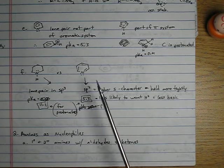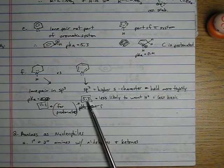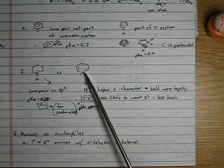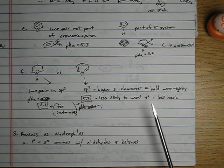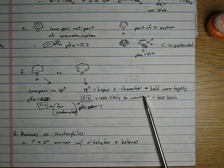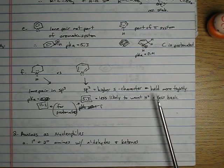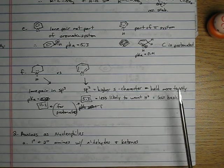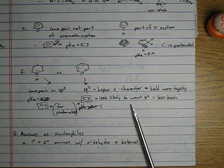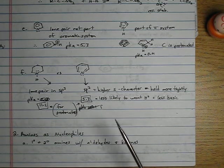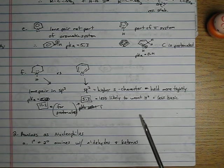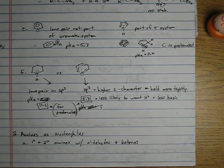And why is pyridine at 5.3? Because note that this nitrogen here in pyridine is sp2 hybridized, not sp3. So we've got higher s character, which means that the electrons are held a little more tightly, less likely to want to be donated to a hydrogen.